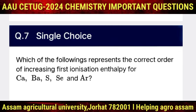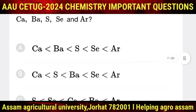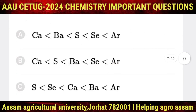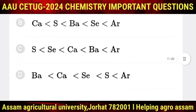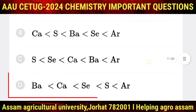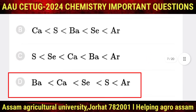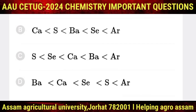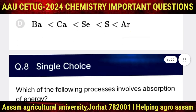Question number 7: which of the following represents the correct order of increasing first ionization enthalpy for calcium, barium, sulfur, selenium, and argon? The correct option is D: Ba < Ca < Se < S < Ar.